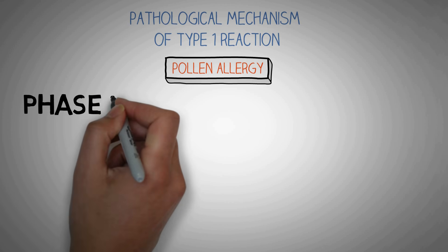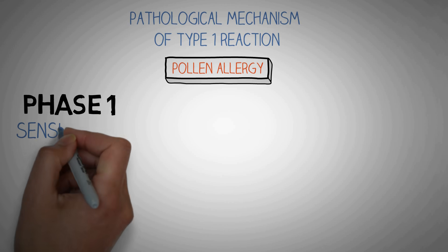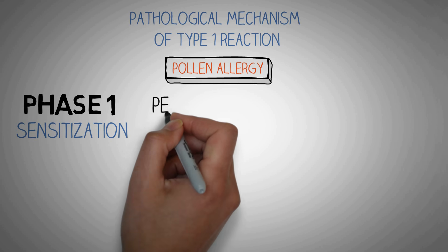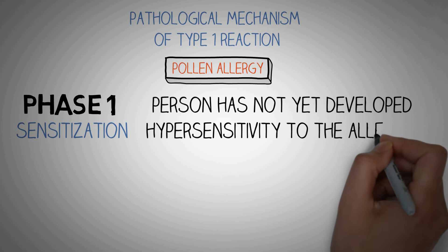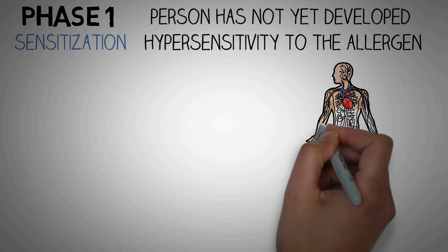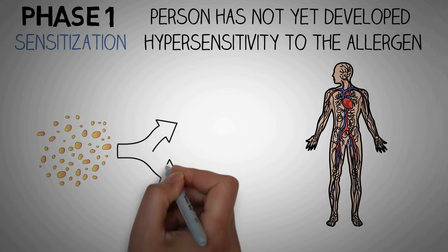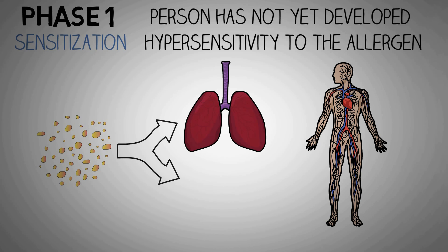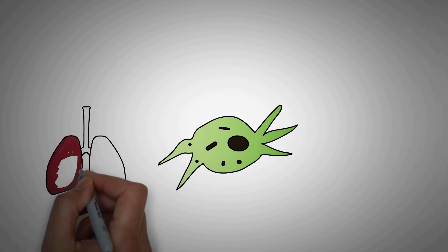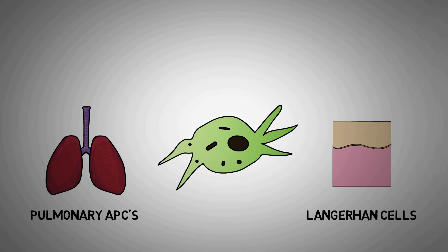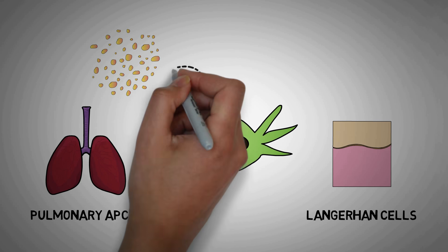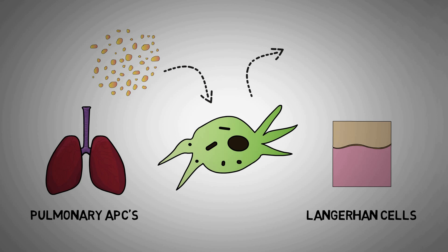The first phase of type 1 reaction involves sensitization — sensitization to the antigen, which refers to dust or pollen in this case. This is the phase when the person has not yet developed hypersensitivity to the allergen. When the person is exposed to dust or pollen, it enters the body through two main routes: the respiratory membrane of the lungs and the skin. At both these places, we have specialized cells known as antigen presenting cells. In the lungs we have the pulmonary antigen presenting cells, and in the skin we have the Langerhans cells. These cells capture the minute antigens present on the dust or pollen and take these antigens to the T cells.